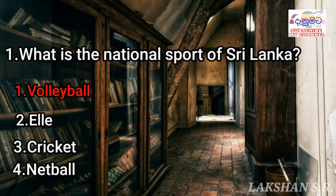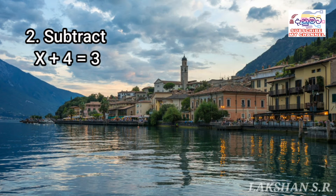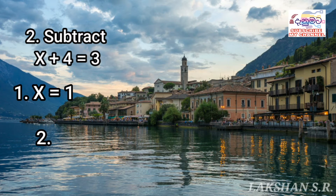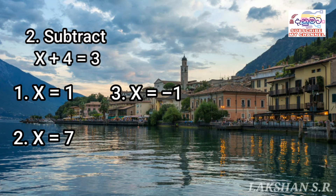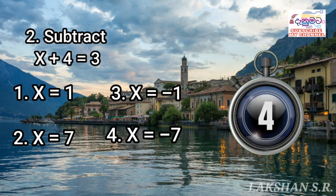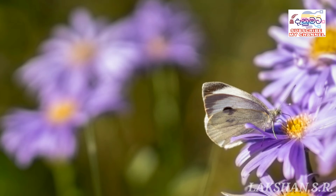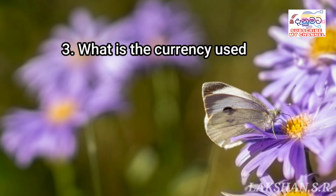Let's go to our second question: Solve x plus four equals three. The first answer is x equals one, second answer is x equals seven, third one is x equals minus one, fourth one is x equals minus seven. The correct answer is the third one: x equals minus one.